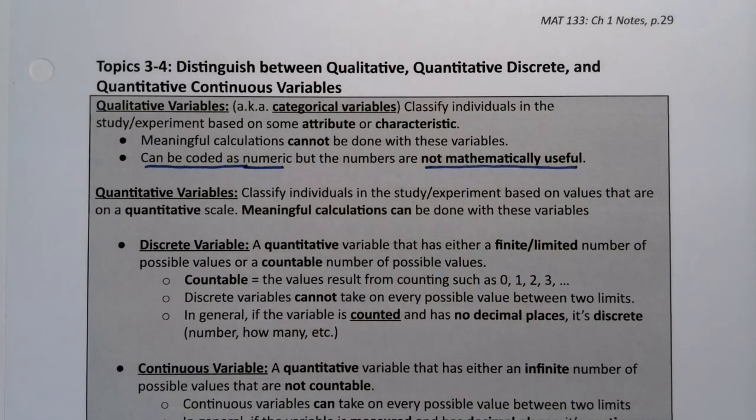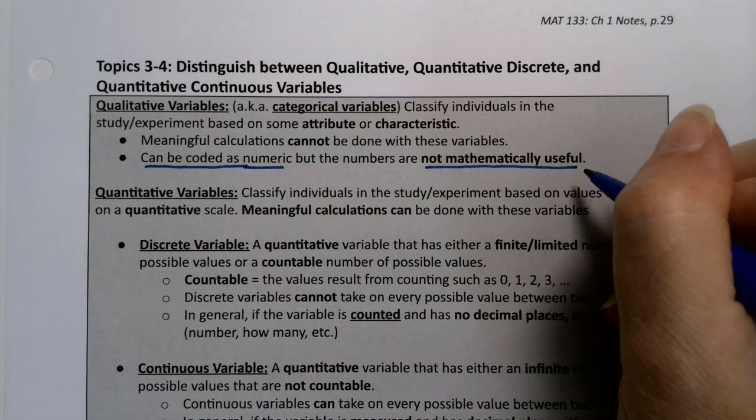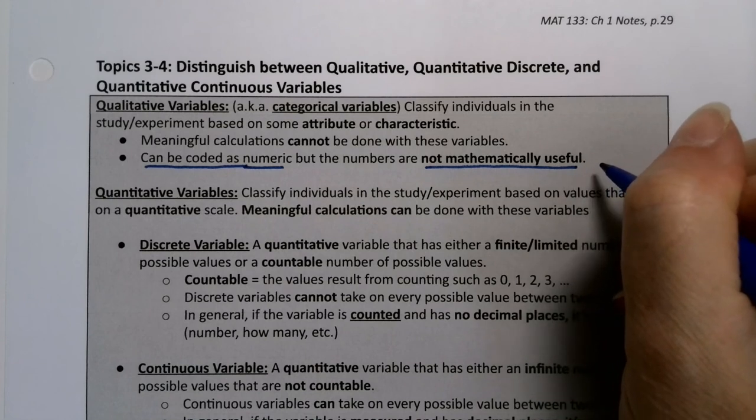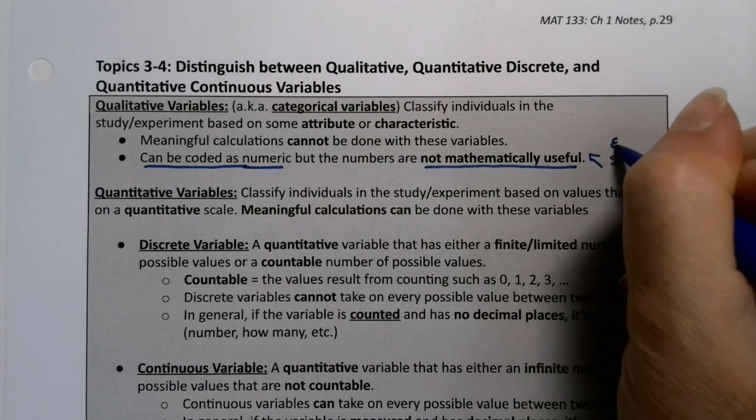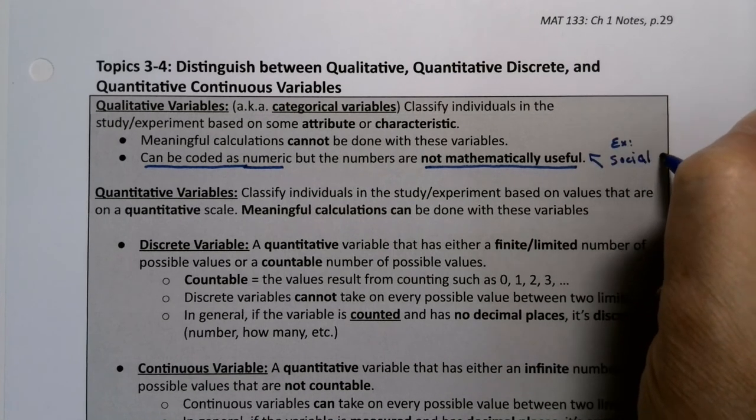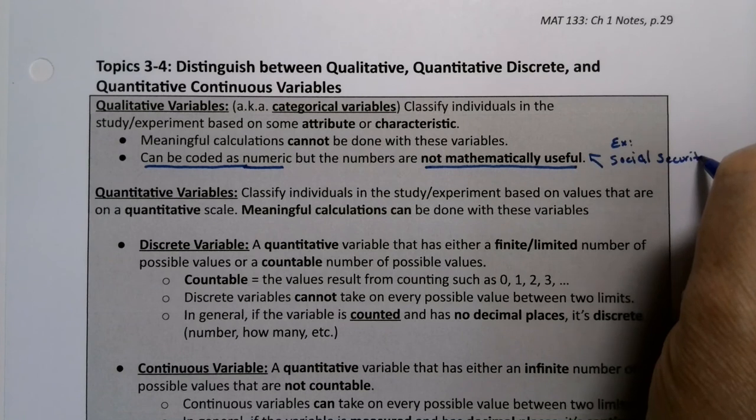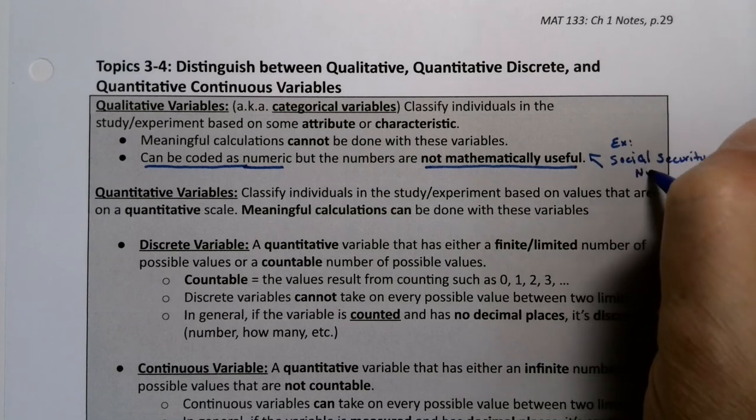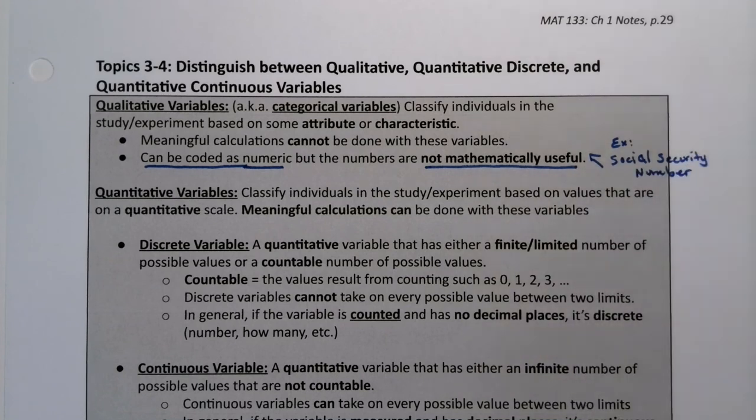You might be thinking, what in the world does that mean? Well, an example of that would be, say, your social security number. So your social security number, just as an example, is not a number that you can perform a meaningful calculation on. So it's a number, but it's a qualitative variable.